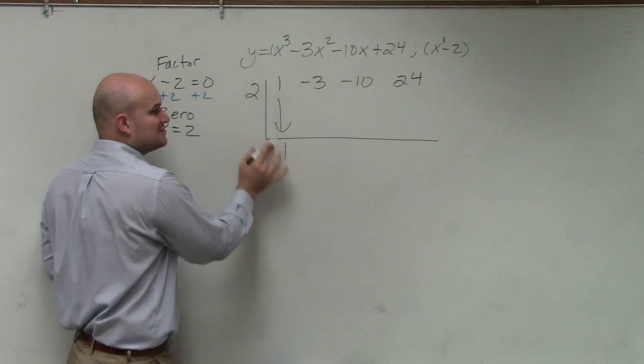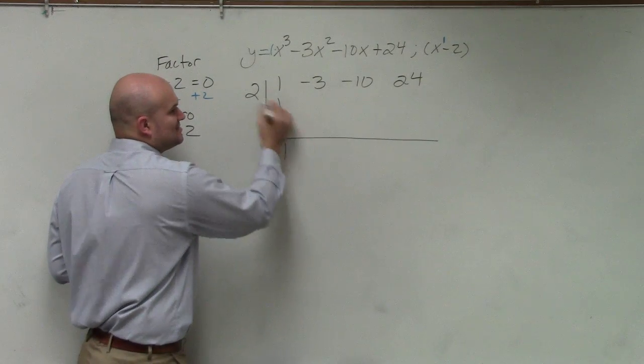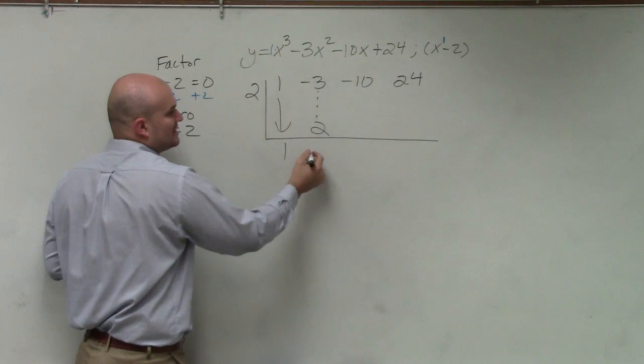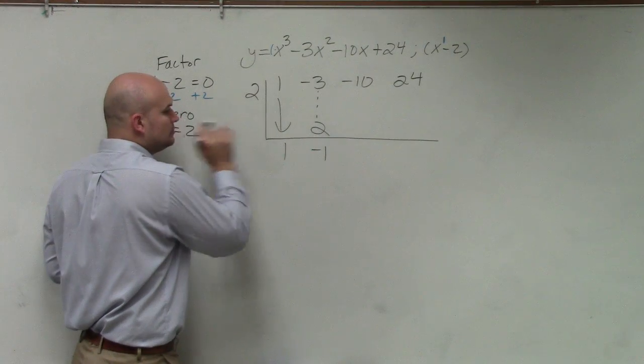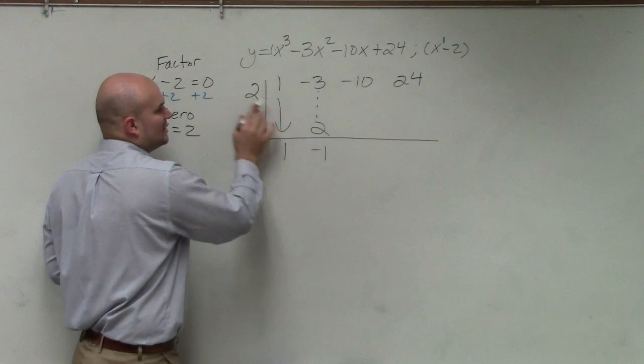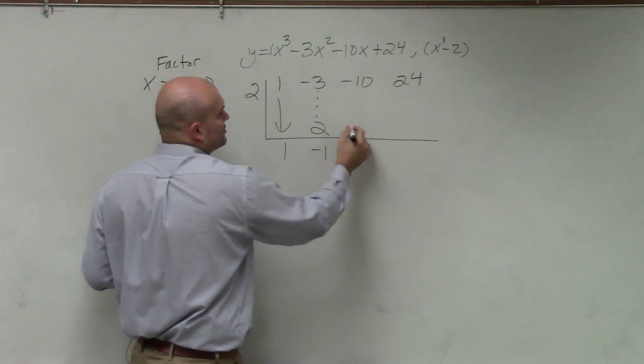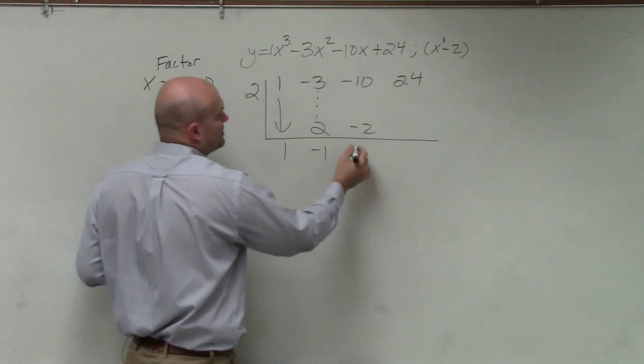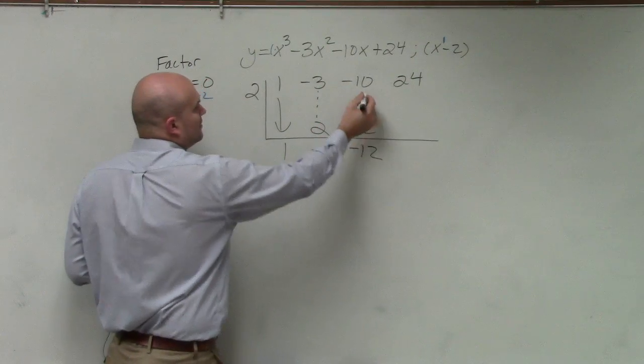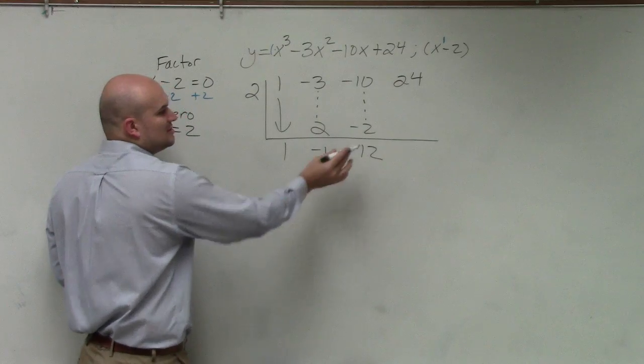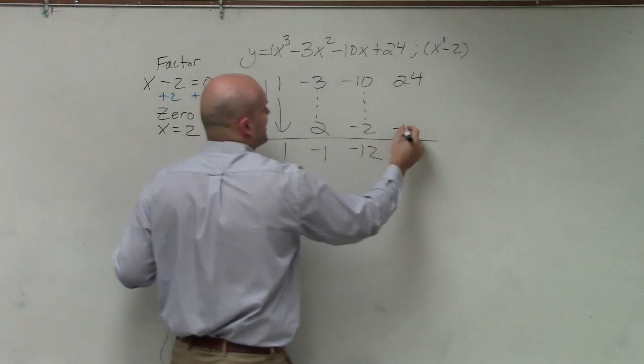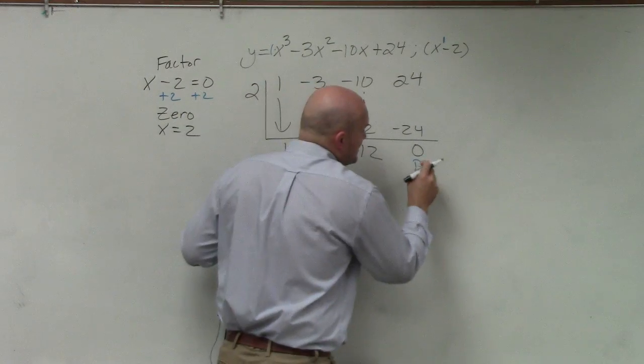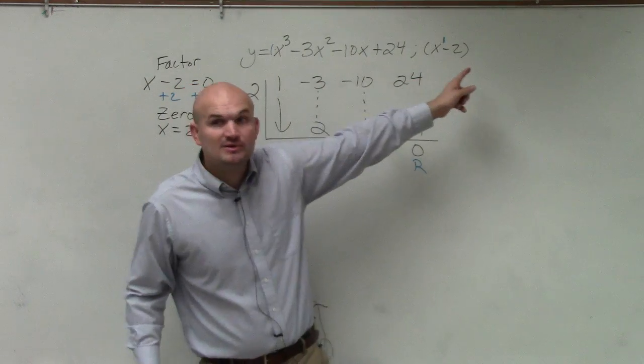2 times 1 is, or 1 times 2 is 2. And then we add on the verticals. Negative 3 plus 2 is negative 1. Multiply on the diagonals. Negative 1 times 2 is going to be a negative 2. Negative 10 plus negative 2 is going to be a negative 12. Add on the verticals. Multiply on the diagonals. Negative 24, 0. So that is our remainder. So does that prove that x minus 2 is a factor?